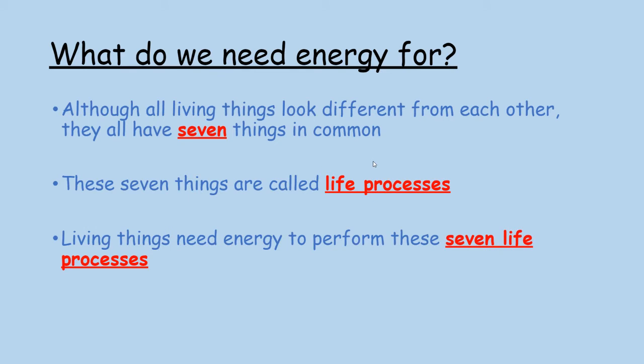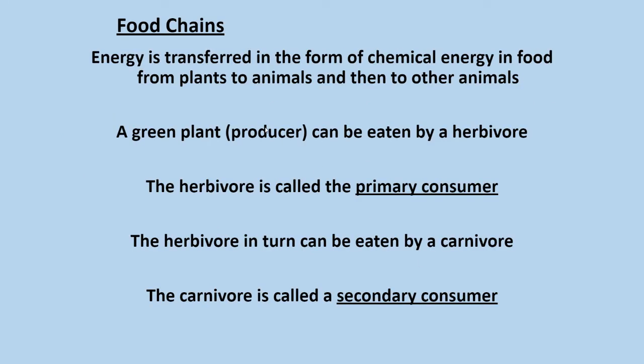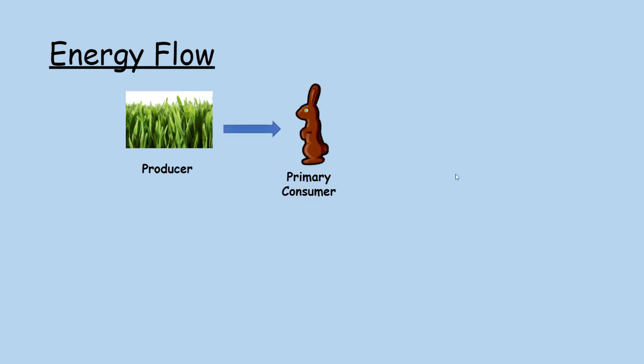A food chain shows us how energy transfers through an ecosystem. It travels in the form of what's called chemical energy — you may have also encountered heat energy, radiation, or kinetic energy in physics. A green plant (a producer) can be eaten by a herbivore or omnivore, making that animal the primary consumer. What eats the primary consumer is the secondary consumer, and then you get the tertiary and quaternary consumers as well.